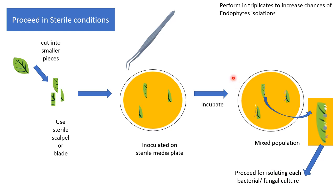To ensure you are isolating everything present in the leaf, perform the experiment in triplicates to increase the chances of endophyte isolation. Once you have isolated the desired bacterial or fungal culture, you can proceed further — for example, profiling secondary metabolites the culture is producing, or pursuing nanoparticle synthesis, anti-cancer, or antibacterial applications, depending on your experimental aim.